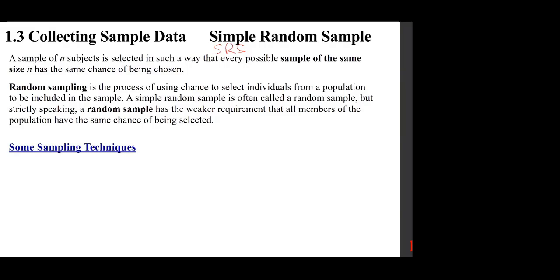If we have 50 students and 30 are female, the probability of picking a female is 30 out of 50. But simple random sampling means every sample of the same size has an equal chance. If you have 50 students and want to pick 5, the number of ways is a combination of 50 choose 5 — order doesn't matter.